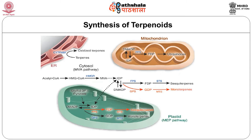At the cellular level, terpenoid synthesis involves the endoplasmic reticulum and cytochrome P450 for oxidation of terpenes. The mevalonic acid pathway in the cytosol converts acetyl-CoA via HMG-CoA reductase to mevalonic acid, then to IDP and DMADP. These can be generated in plastid pathways to produce many monoterpenes and sesquiterpenes. In the mitochondria, ubiquinones are utilized in the electron transport chain.